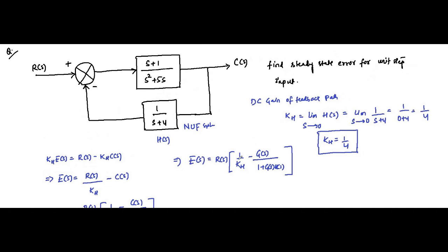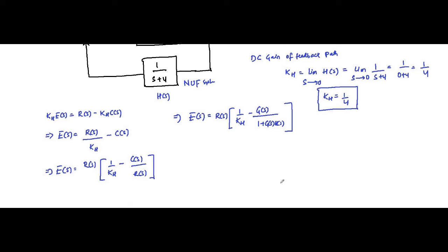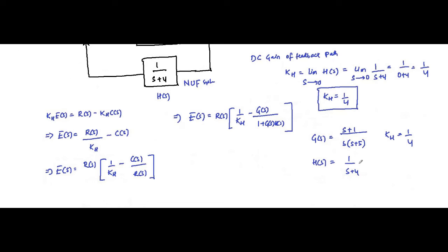Now substituting the respective values: G(s) = s(s+1) / [s(s+5)], which can be written as (s+1)/(s+5). H(s) = 1/(s+4), and K_H = 1/4. The unit step input has a Laplace transform of R(s) = 1/s.